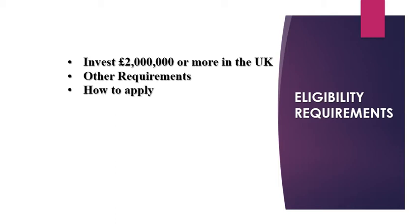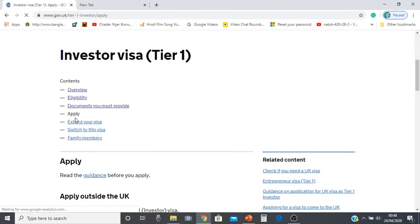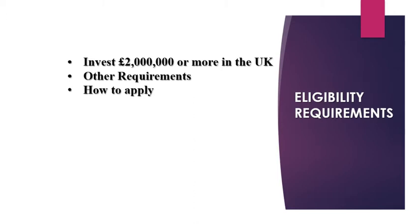There is no requirement of English language or maintenance funds. The entire application process is now online — there is no more paper-based application. On the UK Home Office website, you can find the Investor Visa Tier 1. If you click on 'Apply,' the screen will direct you to make an application online through the UK Visa and Immigration portal, which will guide you step by step to complete the application form.